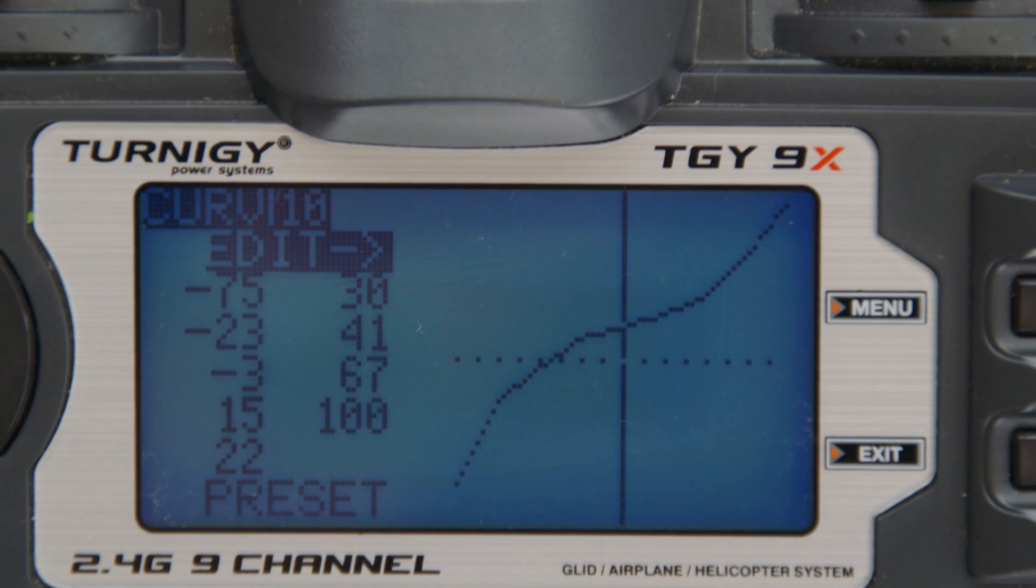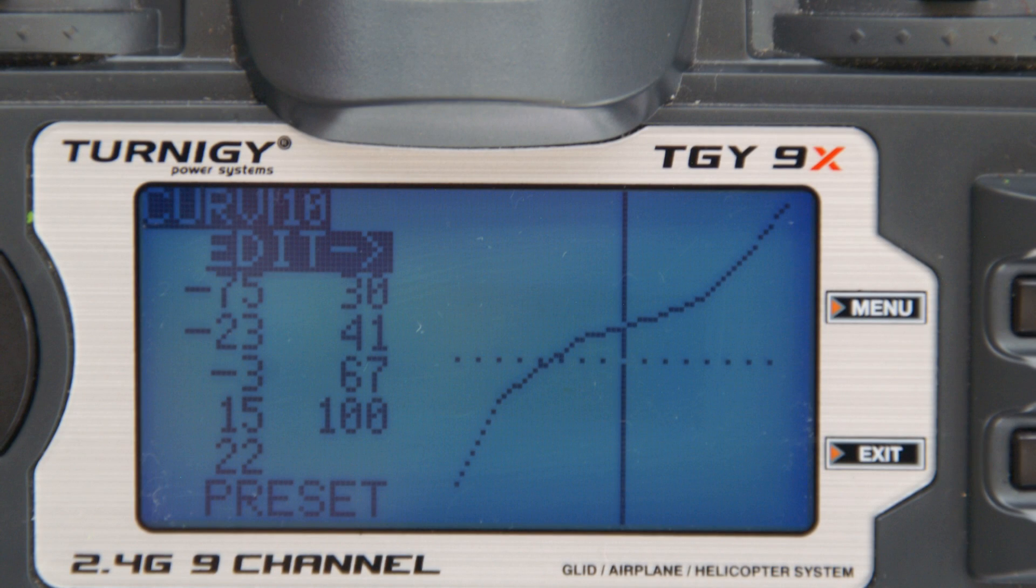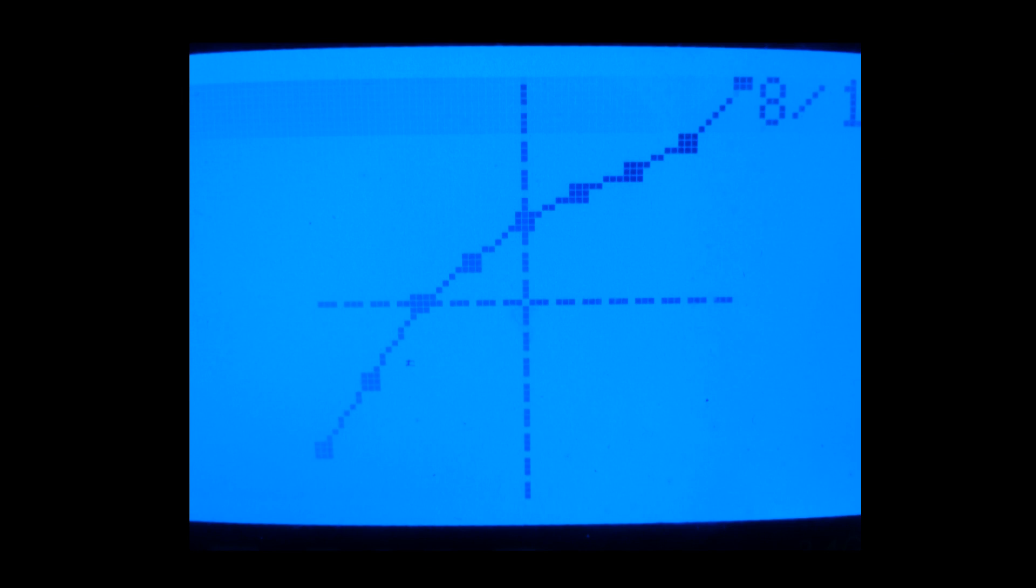In part 1, I spoke about using a throttle curve to reduce response around the hover point. This is helpful for lower KV prop speed setups, but on higher prop speed setups a positive throttle curve may be required to ensure the throttle response is adequate, particularly when flying fast.